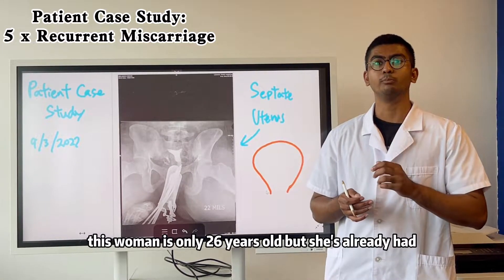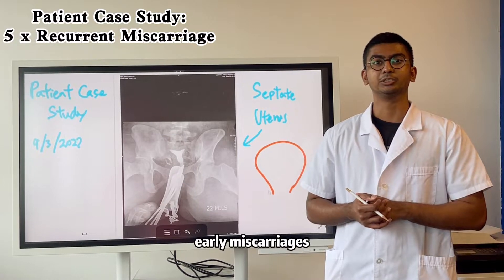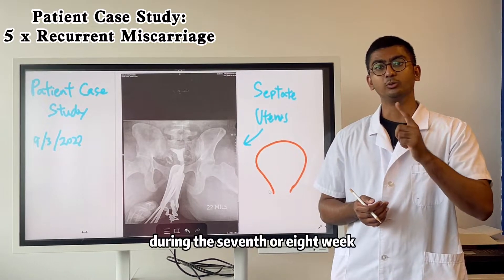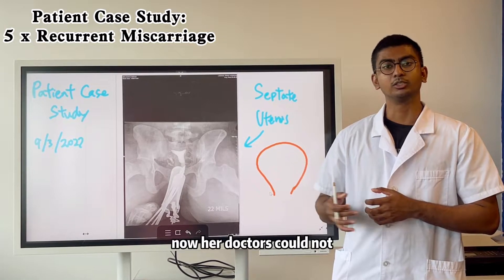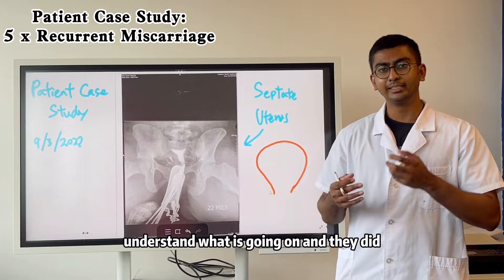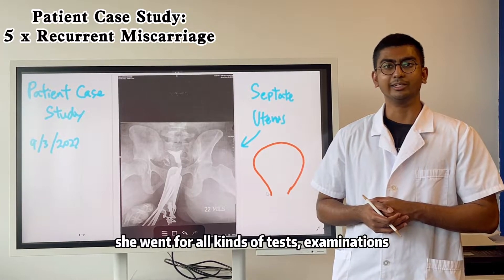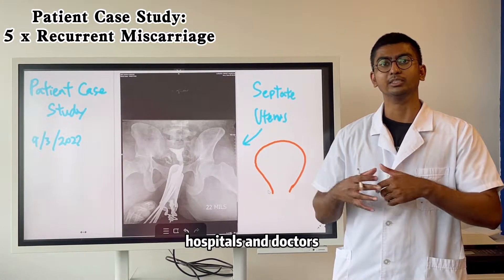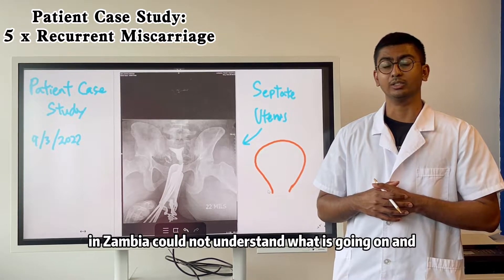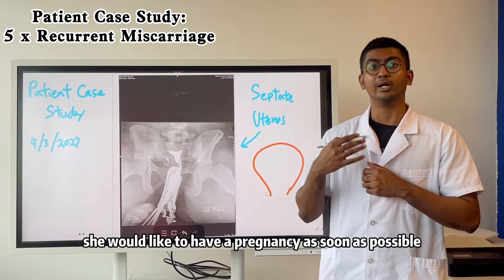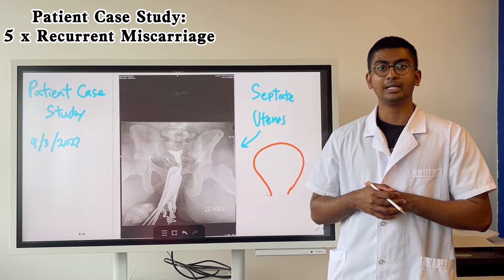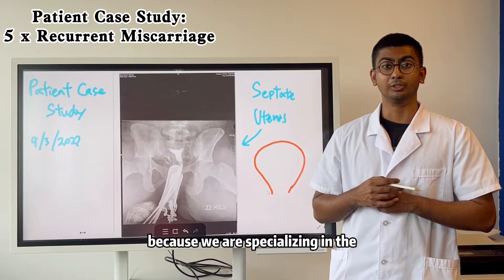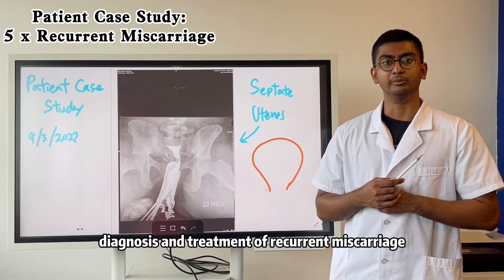This woman is only 26 years old but she's already had 5 consecutive early miscarriages. All miscarriages happened within 12 weeks — the first 4 happened during the 7th or 8th week and then the last miscarriage happened in the 10th week. Her doctors could not understand what was going on. She went for all kinds of tests, examinations and imaging. All hospitals and doctors in Zambia could not understand what was happening, and because of her young age she would like to have a pregnancy as soon as possible. She contacted us at Antihospital, seeking help because we specialise in the diagnosis and treatment of recurrent miscarriage.